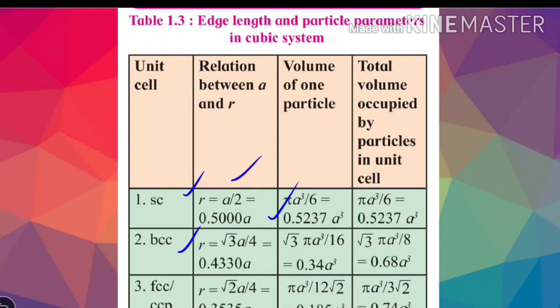For face centered cubic (FCC), the relation is r = √2 × a / 4, which simplifies to r = 0.3535 × a.